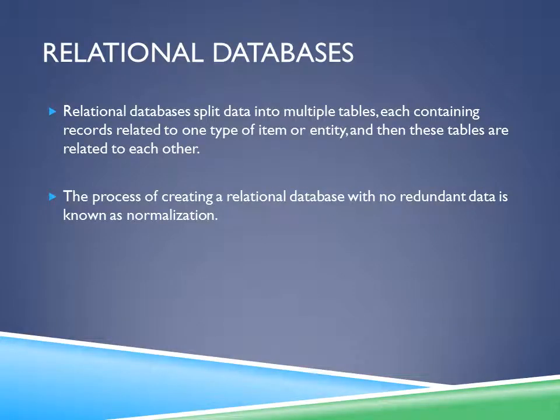Relational databases split data into multiple tables, each containing records related to one type of item or entity, and then these tables are related to each other. They're a really great way to represent data. The process of creating a relational database with no redundant data is known as normalization.